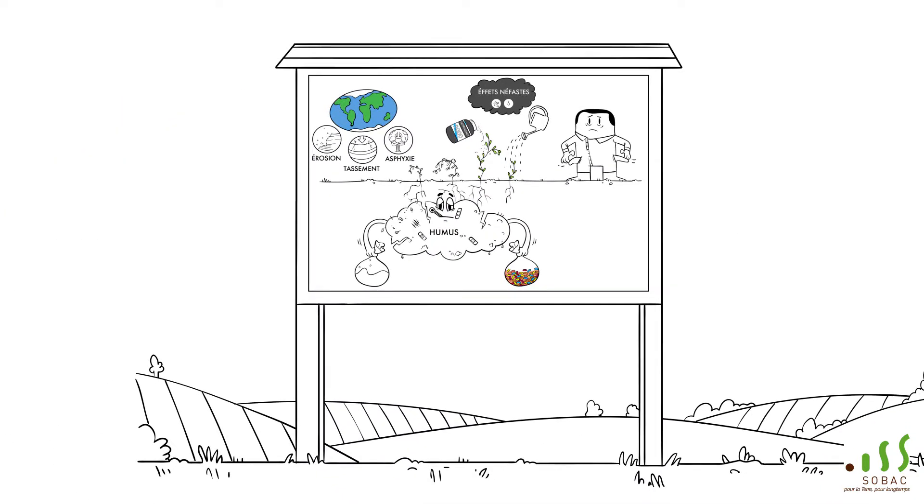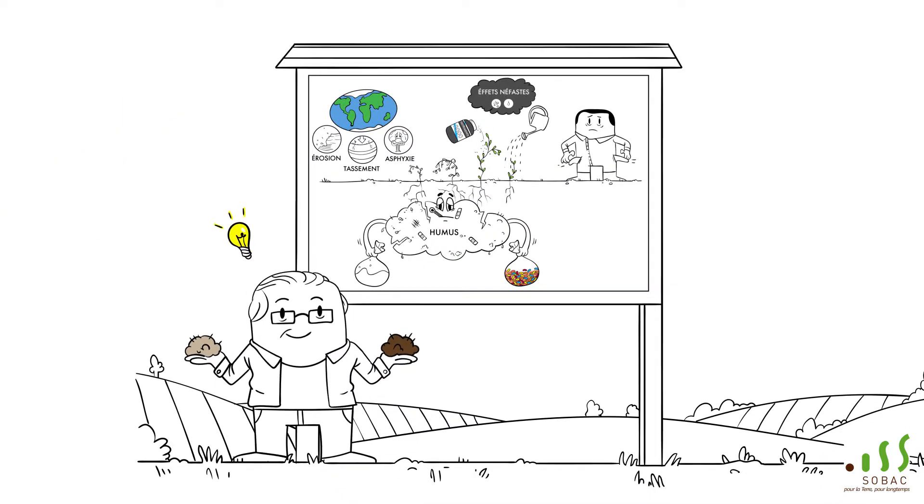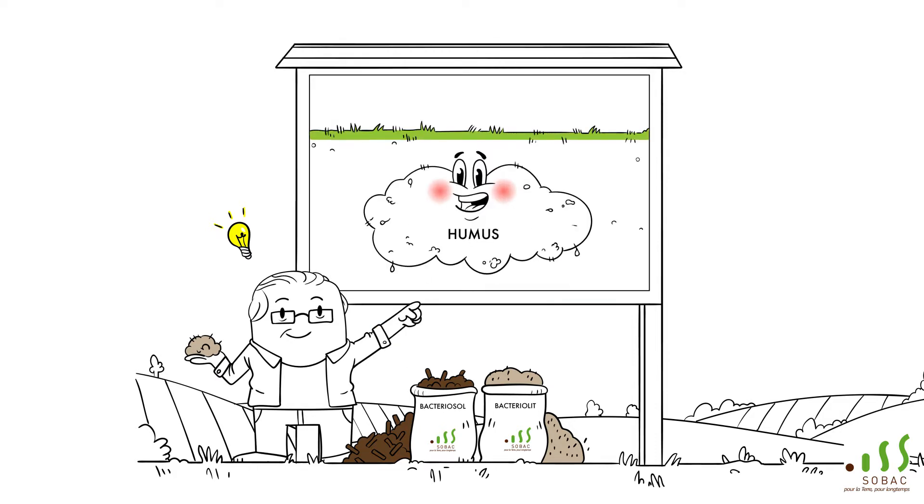The technologies invented by Marcel Mazzi and marketed by Sobak under the brands Bacteriosol and Bacteriolit enable the creation of this humus and thus improve the state and condition of the soil.